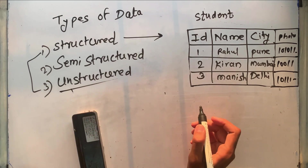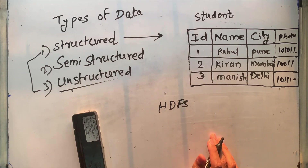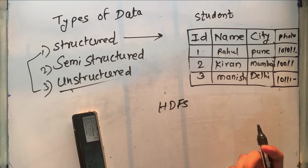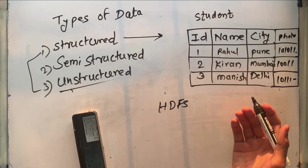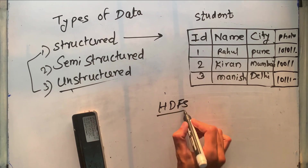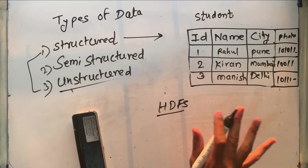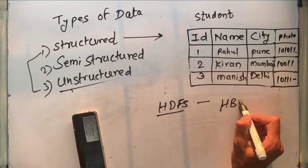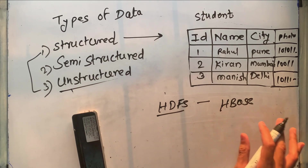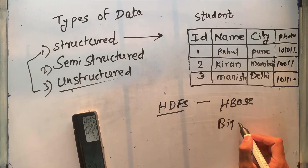That's why distributed databases come into the picture. You may have heard of Hadoop — it uses HDFS, the Hadoop Distributed File System, where data is stored across multiple disks. Using MapReduce or YARN, we can retrieve that data. An example of a distributed database is HBase, which supports horizontal growth, high performance, and handling of large amounts of data.